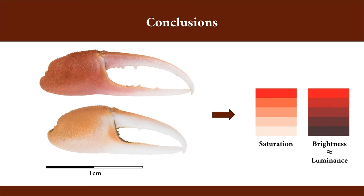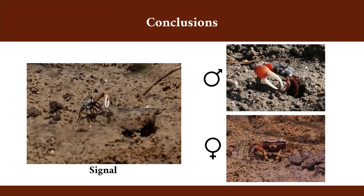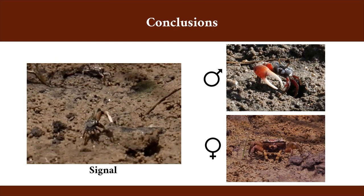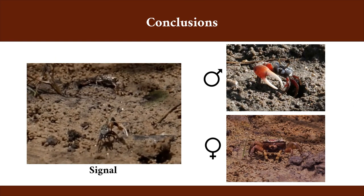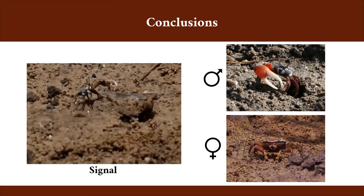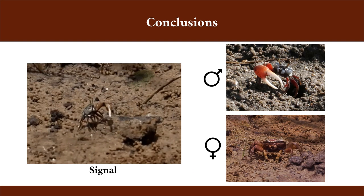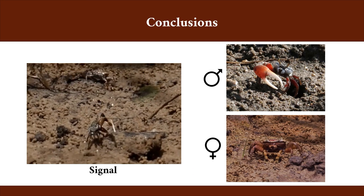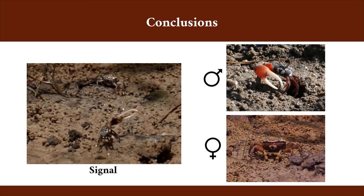Since we found variation in attributes of claw color and they are related to the morphology of the claw, it is likely that claw color is an assessment signal in Leptuca uruguayensis. Considering the function of the claw during waving displays, future studies should test how claw color affects the response of male and female receivers of this signal.